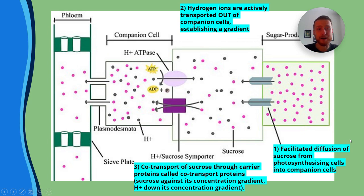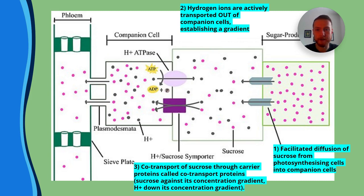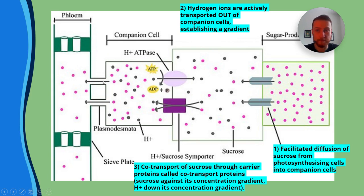Students often get this process confused, so make sure you've got a clear diagram of this. Once the sucrose is in the companion cell, it can just move into the phloem via diffusion.